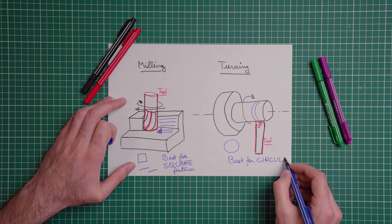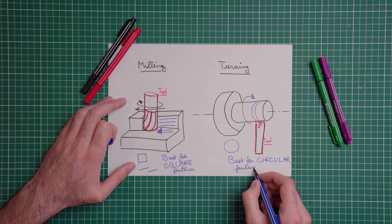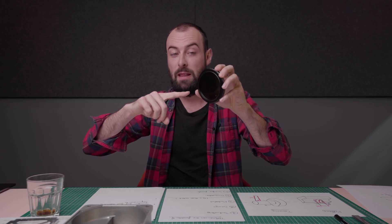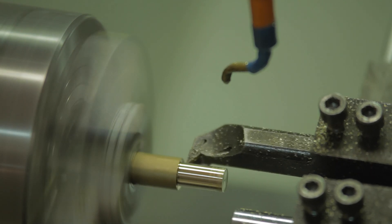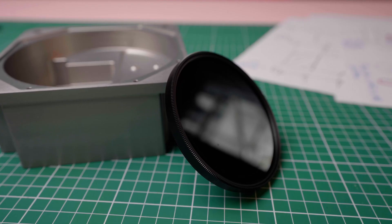Turning, as opposed to CNC milling, has a tool that does not move — it's the part that moves. If I take this camera lens as an example, it was made by taking a piece of raw aluminum billet, placing it in the chuck of a lathe, and then turning the raw material while the tool remained stationary. By matching round features to the lathe and square features to the milling machine, you ensure the best machine is chosen for your application and the most cost-effective solution for the tolerances you need.